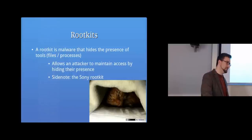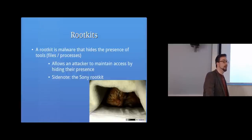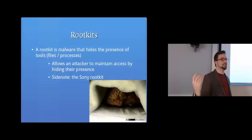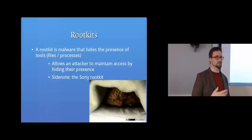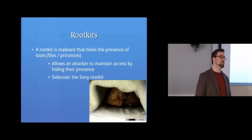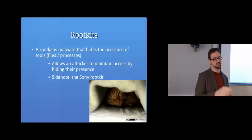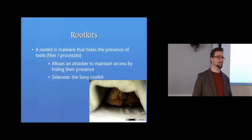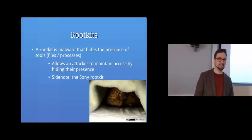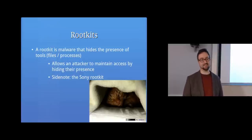Sony the record label, in the early 2000s, released CDs that included rootkit software. When you put the CD into your computer it automatically installed software whose purpose was digital rights management — to stop you pirating music. But it worked like a rootkit: it would hide the presence of certain files and wouldn't show Sony's processes in Task Manager. As a malware author, you could also rename your files a certain way and the Sony rootkit would conveniently help hide your presence on the system. It caused a huge uproar at the time.